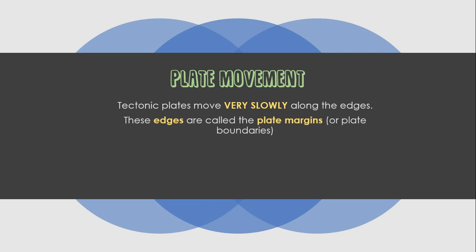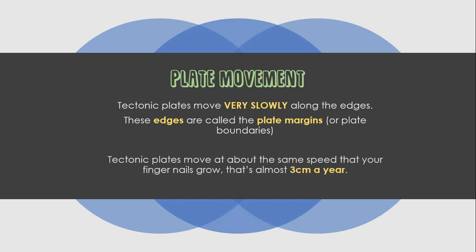Plate movement: tectonic plates move very slowly. Along the edges, these edges are called the plate margins, or otherwise known as the plate boundaries. Tectonic plates move at about the same speed as your fingernail grows — that's almost three centimeters a year. Pretty cool, right?